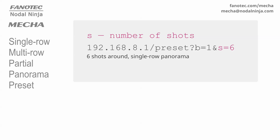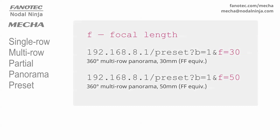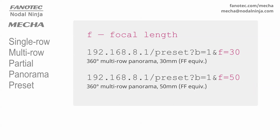The second parameter, S, is the number of shots around for a single-row panorama. For example, this URL will create a preset for 6 shots around. The third parameter, F, is the focal length, required for a multi-row panorama. For example, this will create a preset for a full 360 degrees panorama for a 30mm lens, FF equivalent. And this, a preset for a full 360 degrees panorama for a 50mm lens, FF equivalent. If both S and F are specified, S will be ignored.